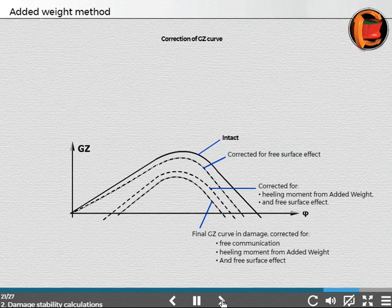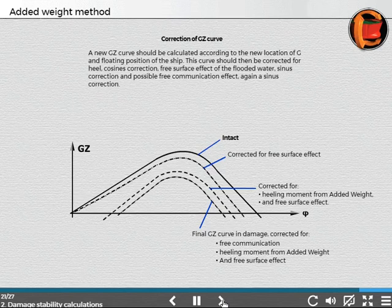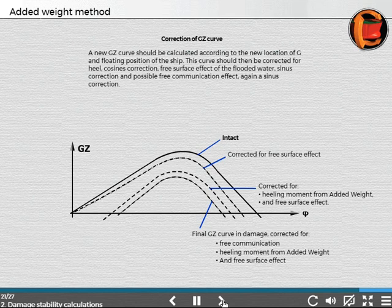Correction of GZ curve. A new GZ curve should be calculated according to the new location of G and floating position of the ship. This curve should then be corrected for heeling moment from the added weight, free surface effect of the flooded water, and possible free communication effect using sine and cosine corrections.